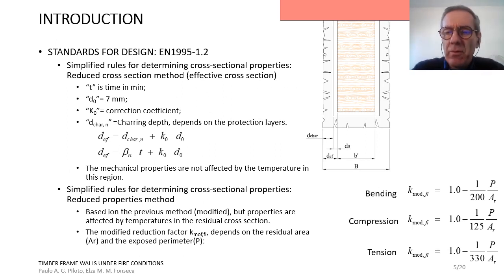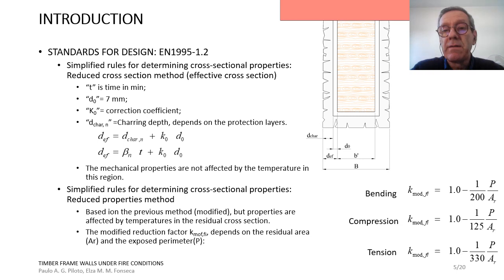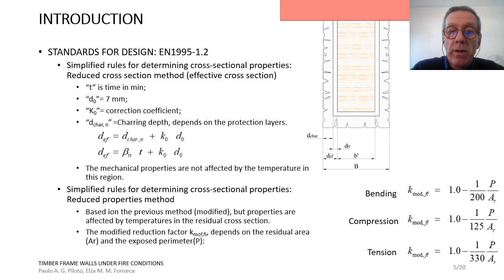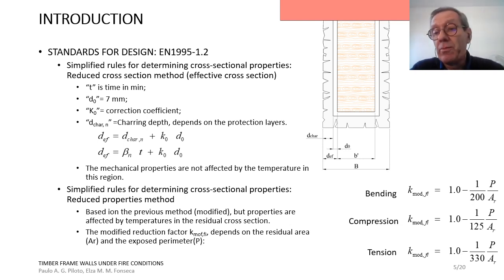We need to take care of the effect of the charring layer. There are two options in Eurocode 5 Part 1.2. First, the reduced cross-section method, where the mechanical properties are not affected by temperature in the region — we talk about the effective cross-section. Second, the reduced properties method, where properties are affected by temperatures in the residual cross-section area. We need to distinguish between the effective and the residual cross-section.